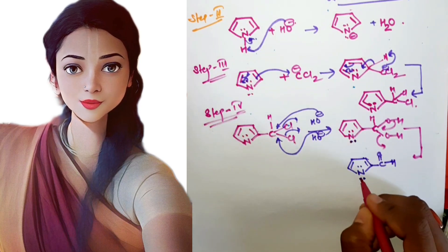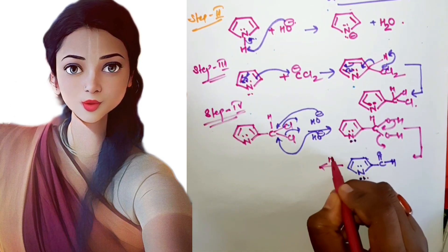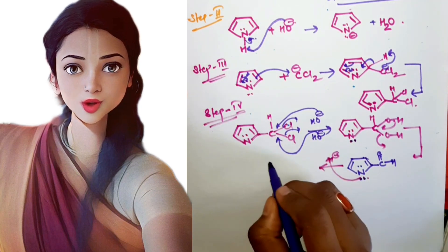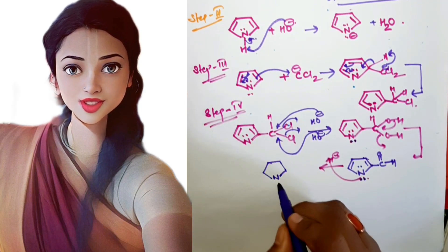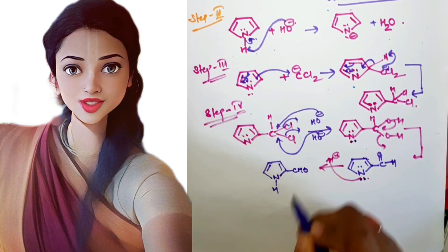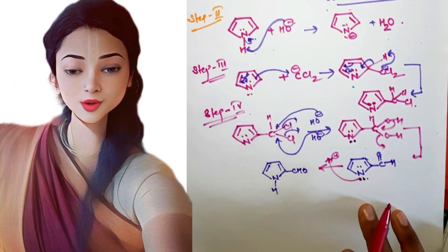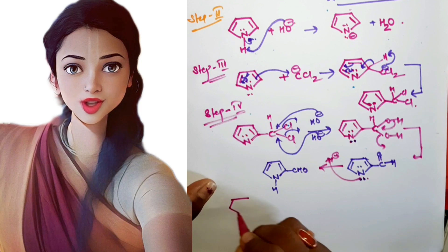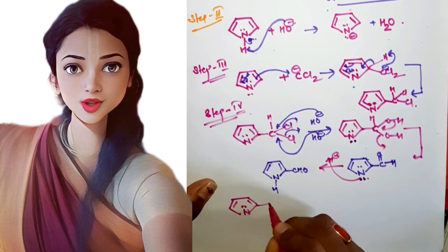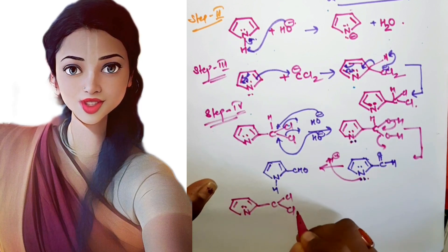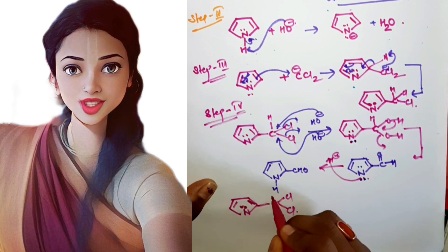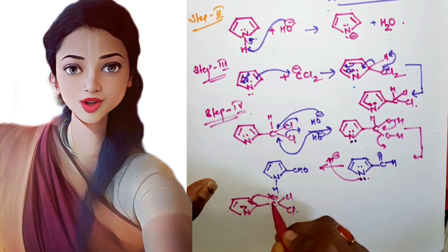Removal of the water molecule gives you a CHO group — an aldehyde group — now attached to the pyrrole ring. Because nitrogen had excess electrons, it again takes up a proton to regenerate the pyrrole ring. This is how we get an aldehyde group attached to the heterocyclic compound, the same way as with the benzene ring in normal Reimer-Tiemann reaction.